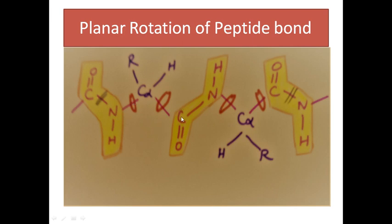There is no freedom of rotation about the bond that connects the carbon and nitrogen of the peptide bond. The C-N bond has no freedom of rotation — you have to remember this. The free angle of rotation: Cα-N is the phi (φ) bond, represented by the symbol phi, and Cα-C is the psi (ψ) bond. They have angles of rotation. Whereas the peptide C-N bond will not have any degree of rotation.